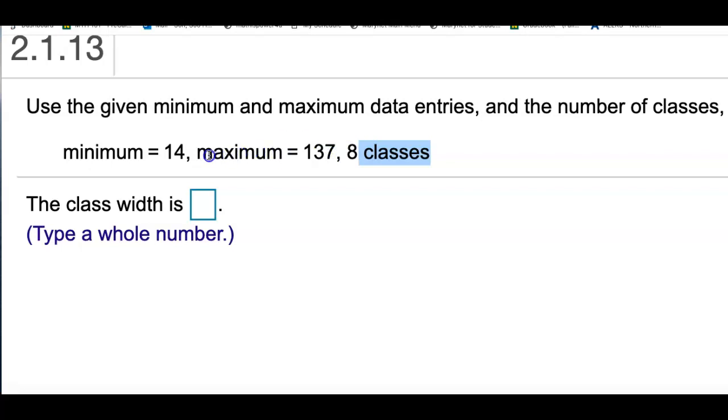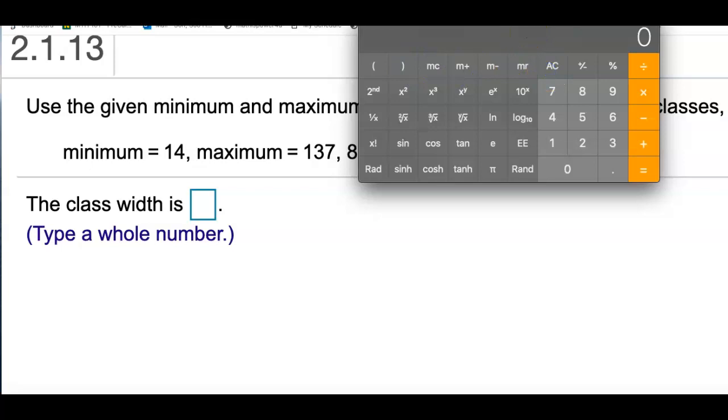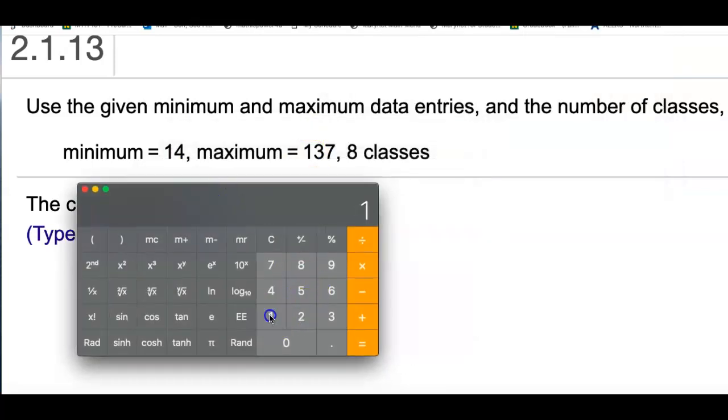So do maximum minus minimum. On my calculator, I'll type maximum, which is 137, minus the minimum, which is 14. So the range is 123.